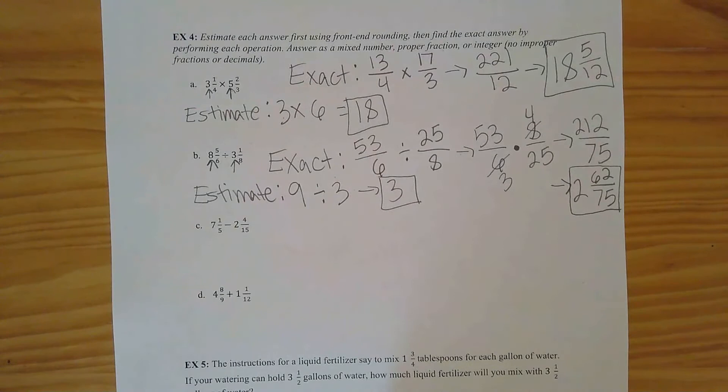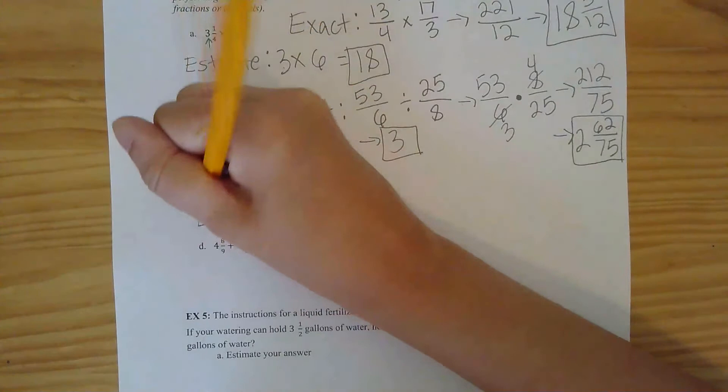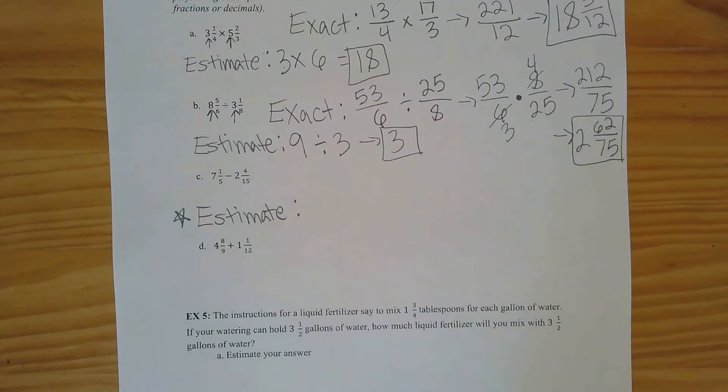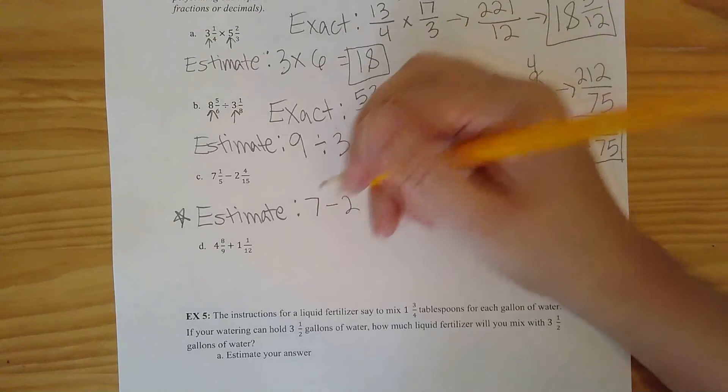For the next one, try the estimate yourself. Round both numbers and do the subtraction. Seven and one-fifth rounds to seven. Two and four-fifteenths rounds down to two. So you should have seven minus two, which is five for our estimate.